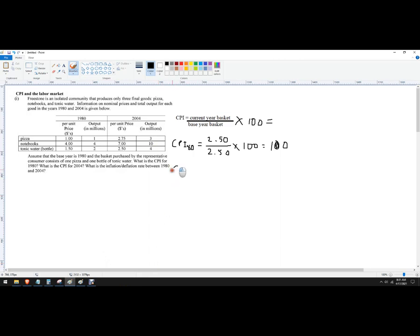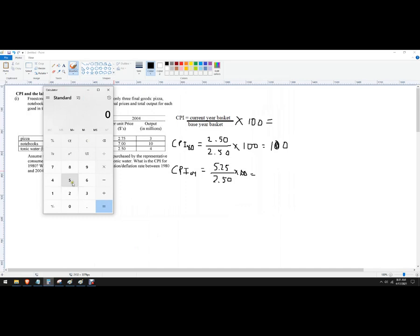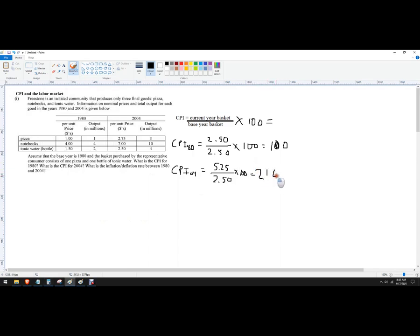So then flash forward CPI in 2004, again, we know the base year basket was 250. And then what we want to know here is $2 and 75 cents plus 250 is $5 25 cents times a hundred. So we'll do that on a calculator here. I guess it looks like I already did it, but just to show you 5.25 divided by 250, that's 2.1 times a hundred. So you can do that in your head, 210.